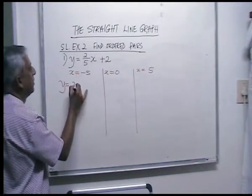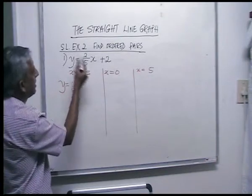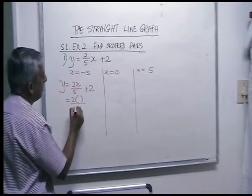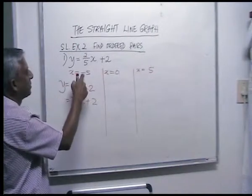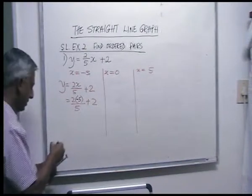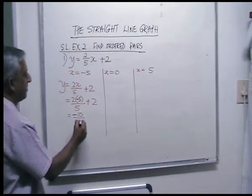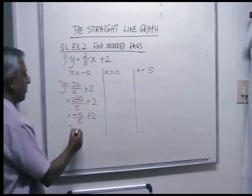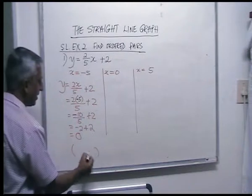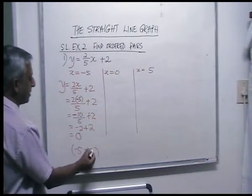Your question is y is equal to two x over five plus two. For x is minus five: two times minus five is minus ten, over five plus two. Minus ten over five is minus two, plus two gives you zero. Your ordered pair is minus five, zero.